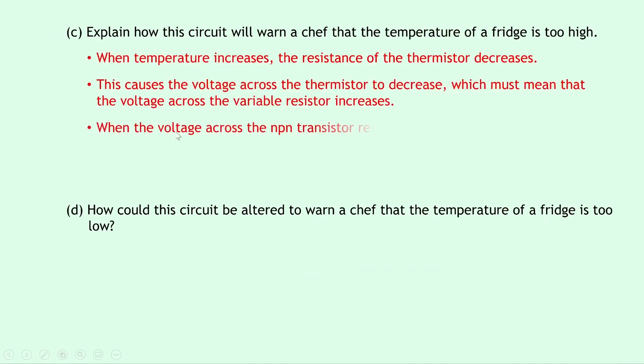We can then say that when the voltage across the NPN transistor reaches 0.7 volts, which is its switch on voltage, it will switch on. And lastly, we can say that this in turn switches on the LED.